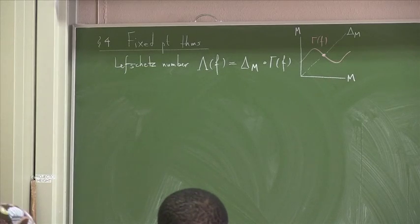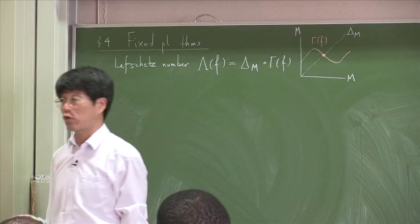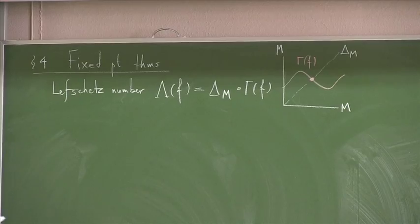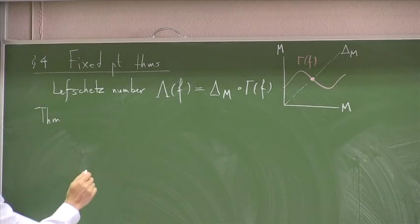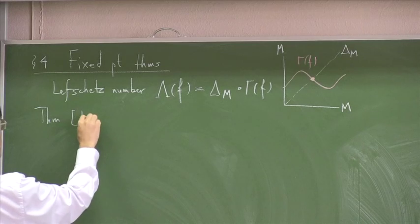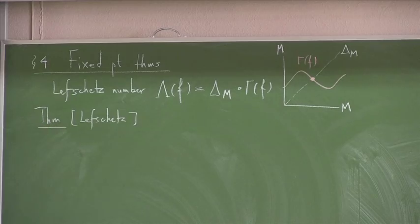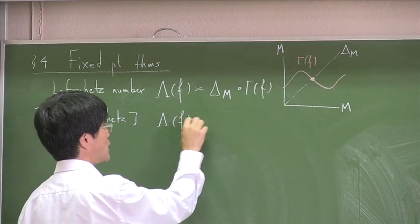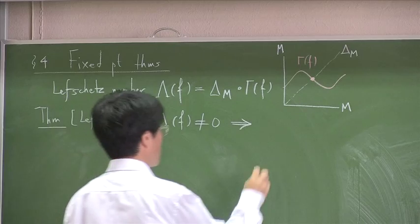If this number is non-zero, that means in particular there must be intersection points contributing plus or minus one. So there must be fixed points. That was the logic. The theorem, which is called Lefschetz Fixed Point Theorem, is almost therefore a tautology. Tautology means saying exactly what the definition is saying, that if the Lefschetz number of a map is non-zero, it implies that the map must have fixed points.